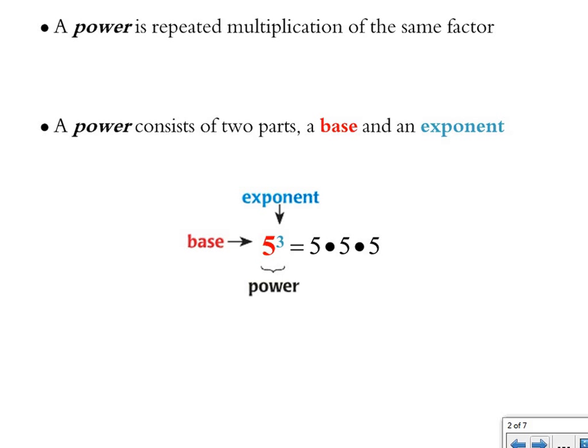In this example, the base is the number 5. The exponent is a small number written in superscript to the right and above the base, and here it's the number 3. Together, the base and the exponent are called a power, so we would read this expression as 5 to the third power.